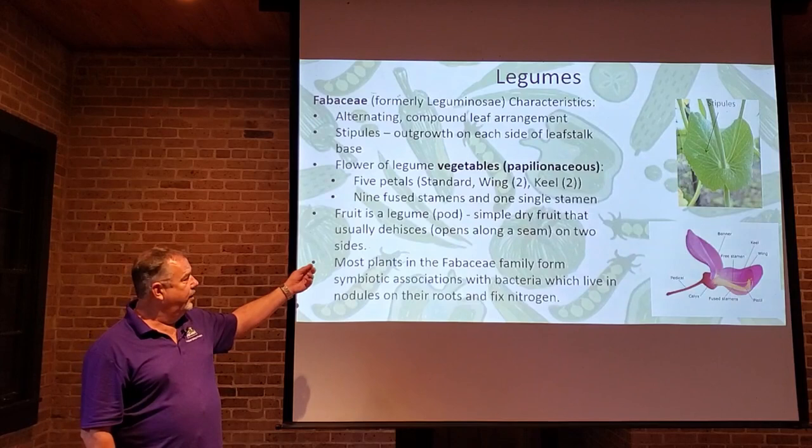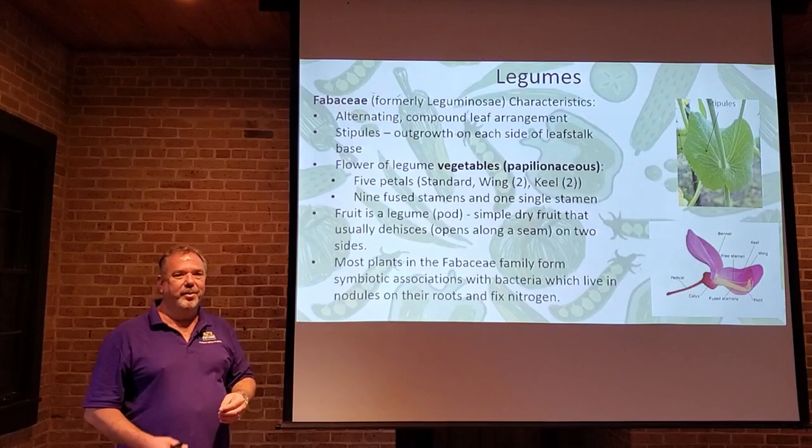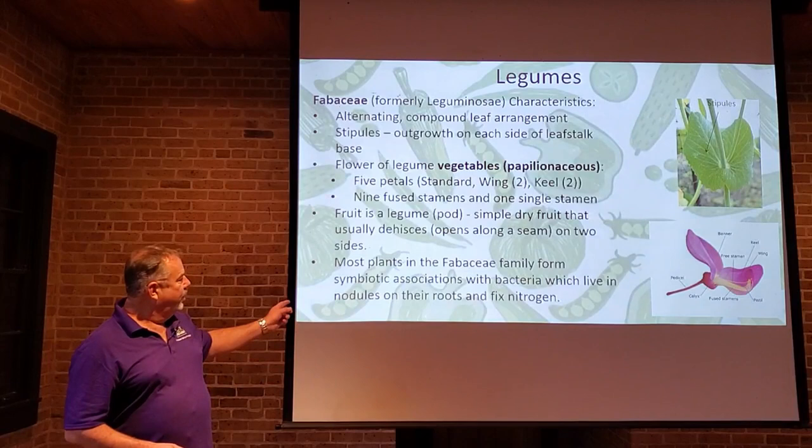The fruit is a legume, so it's a pod — a simple fruit that is usually dehiscent, which means it opens along a seam on two sides. If you ever open peas, you'll know that you split that pod in two and it opens right down the middle, like a zipper.